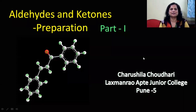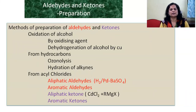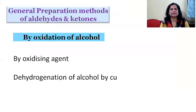Hello students. In this video lecture we are going to study about methods for the preparation of aldehydes and ketones. As there are many methods, we will study these in two parts. In part one we study oxidation of alcohol by oxidizing agents, dehydrogenation of alcohol by copper, ozonolysis and hydration of alkynes from hydrocarbons, and from acyl chlorides — to prepare aliphatic and aromatic carbonyl compounds.